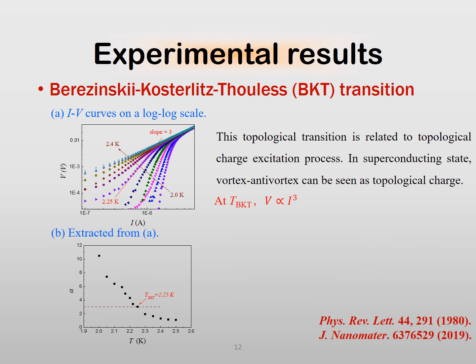To further probe the superconductivity in the aluminum nanofilm, we perform detailed nonlinear IV measurements. As you can see here, when V is proportional to I to the third, we can measure the BKT transition temperature, which is around 2.25 Kelvin. This value is pretty close to the BCS transition temperature.